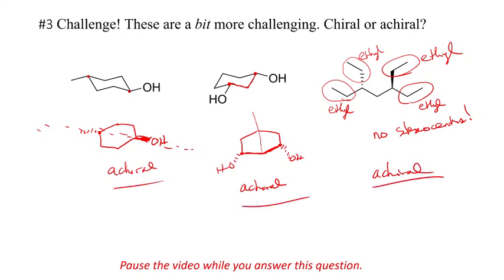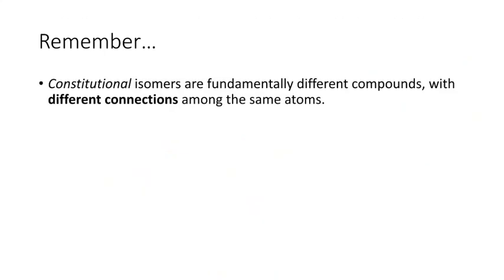Ha-ha. There you go. So remember, constitutional isomers are fundamentally different compounds with different connections among the same atoms. They'll have different names. So they might have different numbering or different prefixes, a different root, a different length of the chain, something like that.